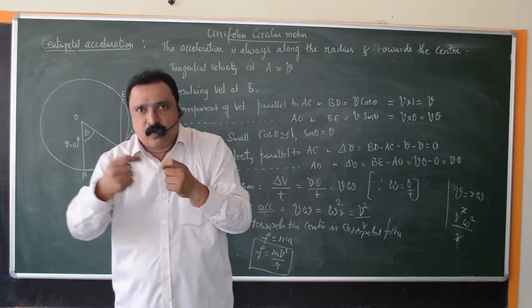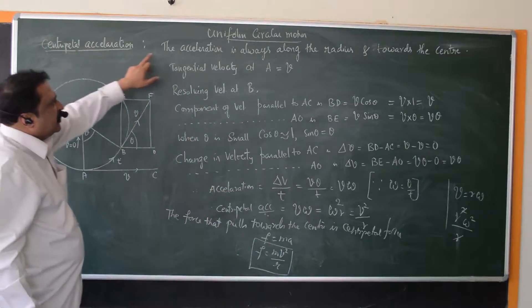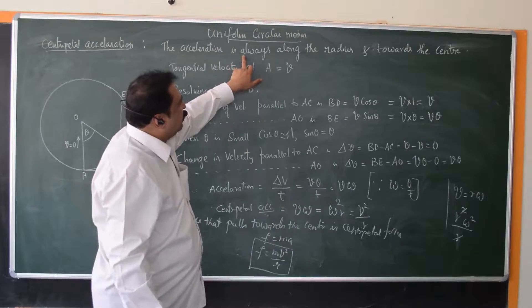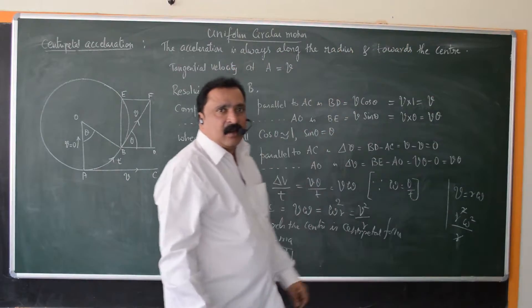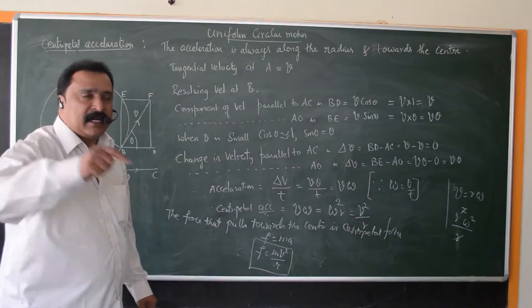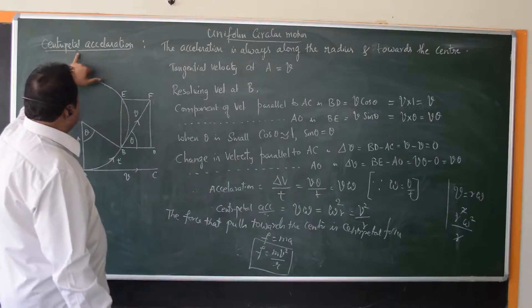This acceleration is called centripetal acceleration. The acceleration which is always along the radius and acting towards the center of the circular path in which the particle is describing uniform circular motion is called centripetal acceleration.